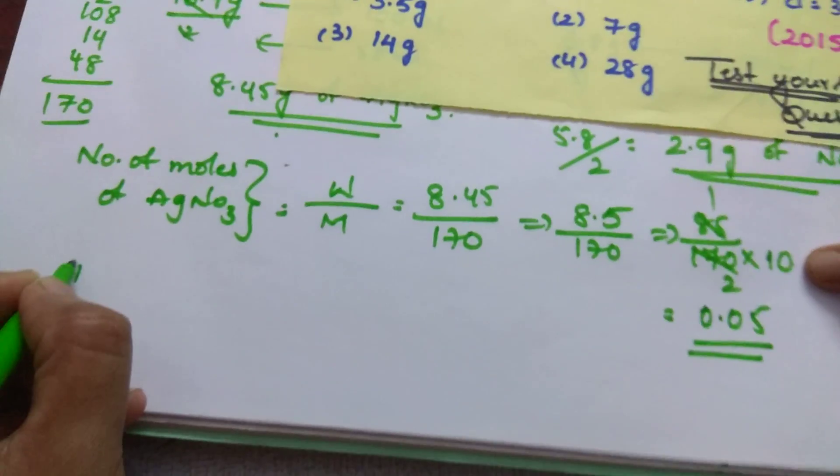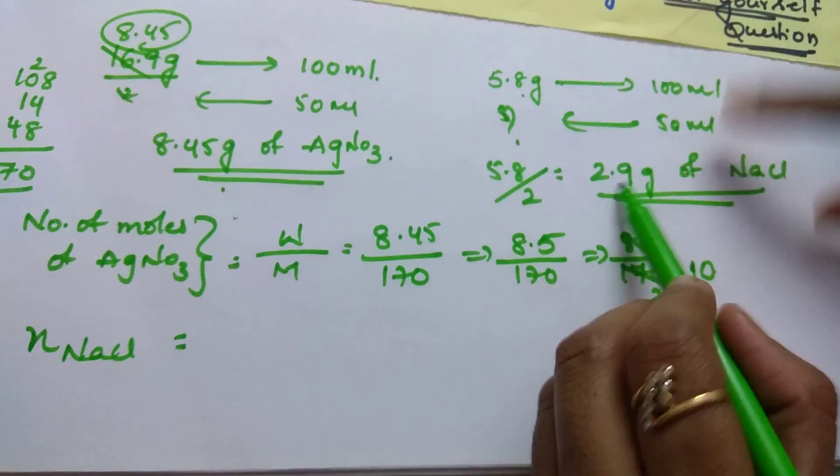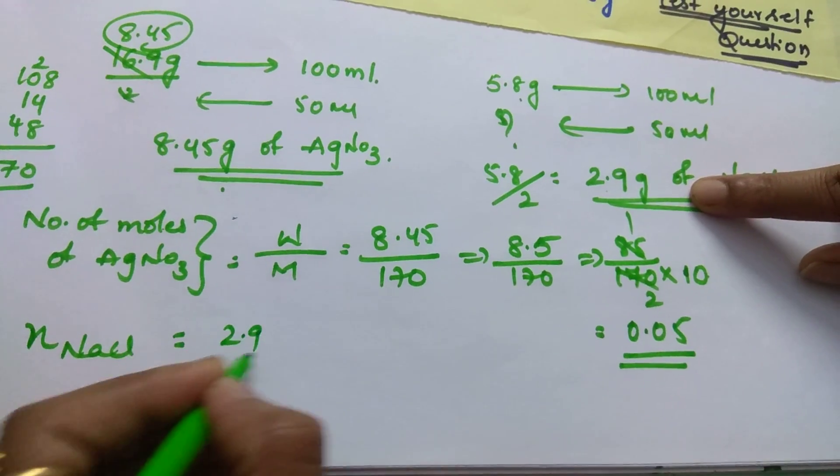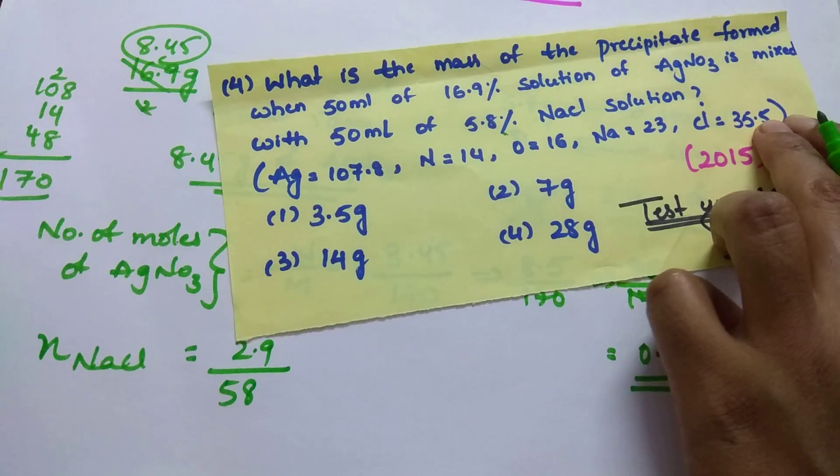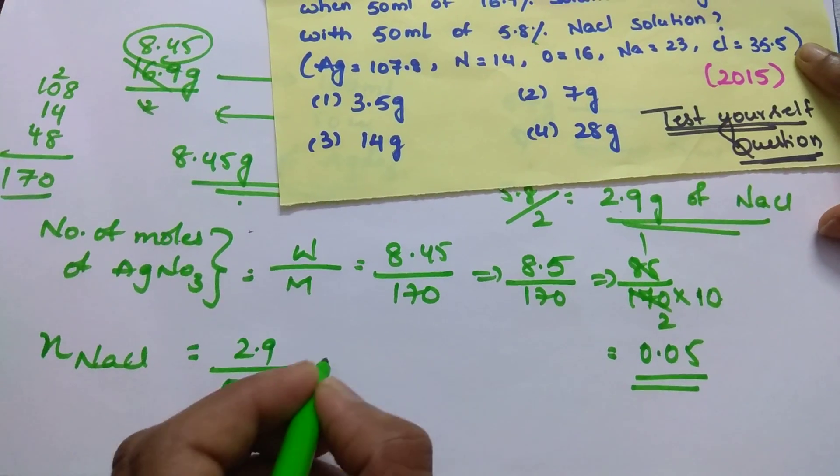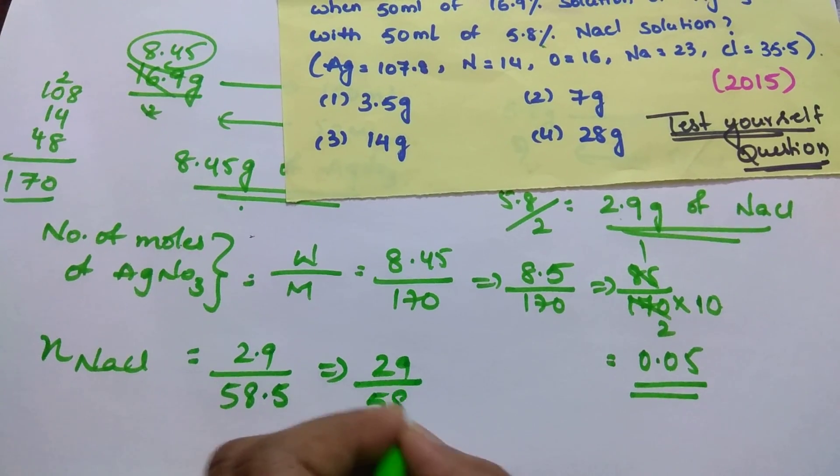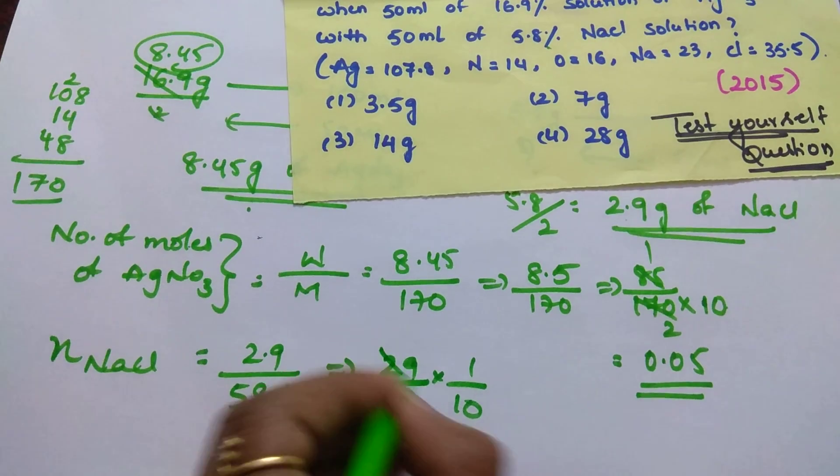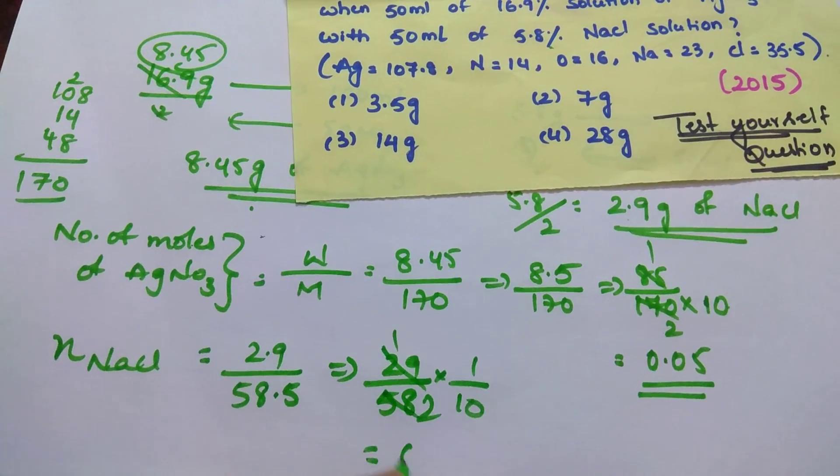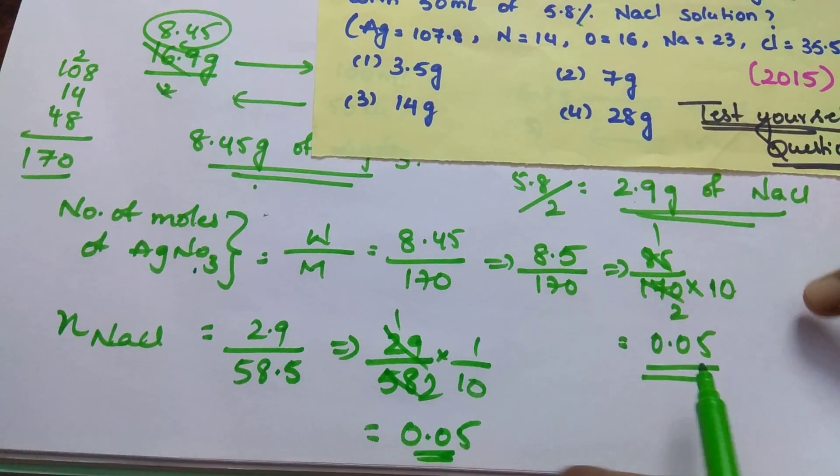In the same way calculate number of moles of NaCl. Weight by molecular weight. Weight how much we got? 2.9 divided by gram molecular weight of NaCl. 35.5 plus 23, you will get 58.5. Then just do it as 29 divided by 58, you will get 1 by 10, which is 0.05 approximately.